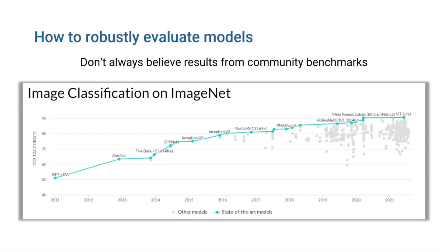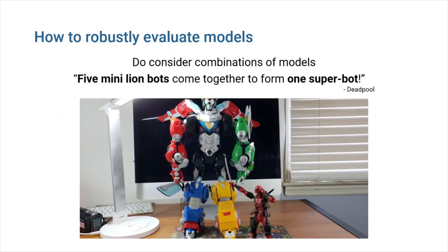Don't always believe results from community benchmarks. The use of benchmark datasets to test new machine learning models has become common, with the idea that comparisons will be more transparent because everyone uses the same data. However, there are significant disadvantages — evaluating many models on the same test set increases the likelihood that the best model just overfits the test set and does not necessarily generalize any better. Do consider combinations of models. Different ML models explore different trade-offs, and by combining them you can sometimes compensate for the weaknesses of one model using the strength of another. Such composite models are known as ensembles, and the process of generating them is known as ensemble learning.